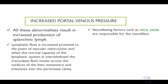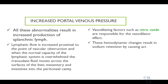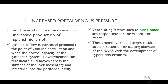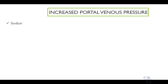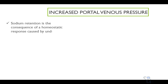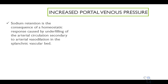Vasodilating factors — for example, nitric oxide — are responsible for the vasodilator effects in this case. There are hemodynamic changes resulting in sodium retention by activation of the renin-angiotensin-aldosterone system, with the development of hyperaldosteronism. These renal effects of increased aldosterone cause sodium retention and also contribute to the development of ascites. Sodium retention is the consequence of a hemostatic response caused by underfilling of the arterial circulation secondary to arterial vasodilation in the splanchnic vascular bed.